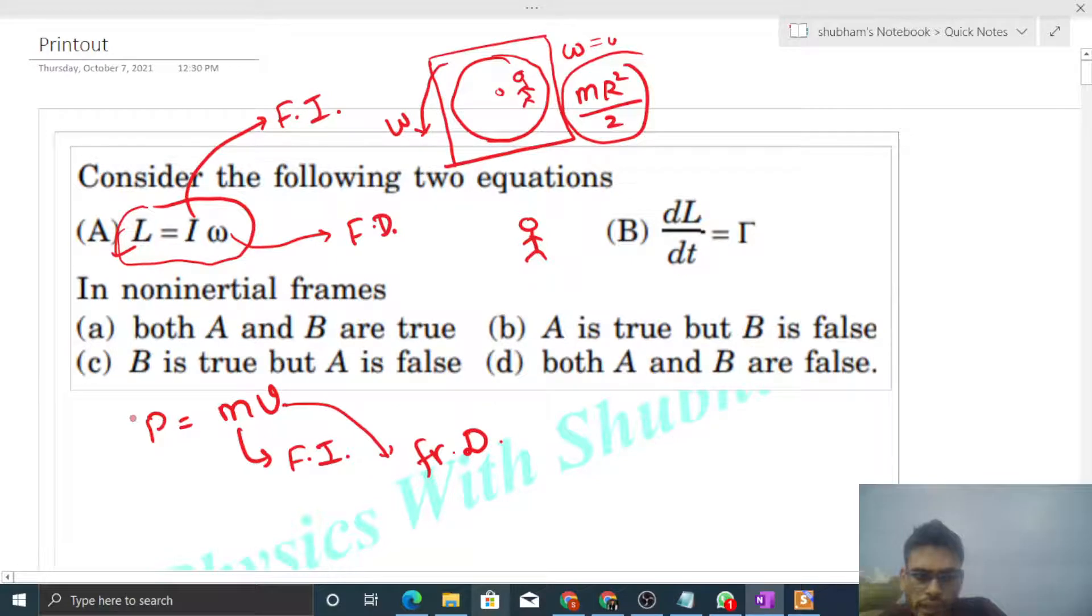So this equation p is equal to mv is valid, but the momentum is frame dependent because the velocity is frame dependent. So the momentum and the velocity are frame dependent. This equation is valid. Similarly, angular momentum and angular velocity are frame dependent. If you have the angular speed, then the equation is valid.